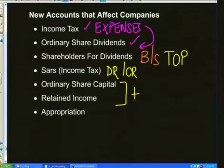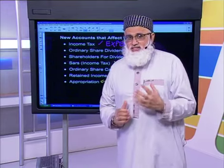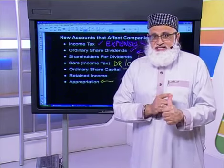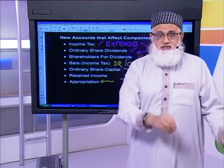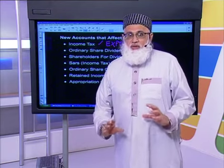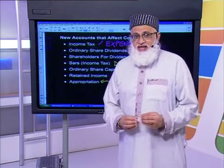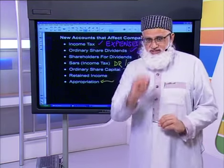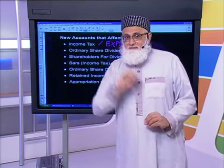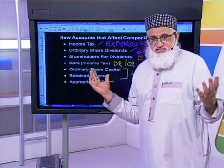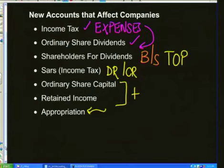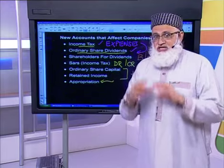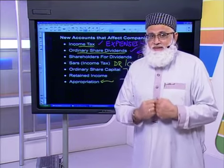Finally, we come to the appropriation account. The appropriation account is the third final account. The first is the trading account dealing with sales and cost of sales. Profit is then transferred to the profit and loss account where all other incomes and expenses are brought in. Thereafter the appropriation account is opened, and this account deals only with expenses unique to a company — namely income tax and ordinary share dividends.